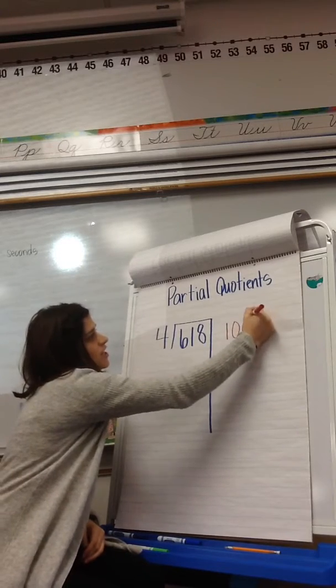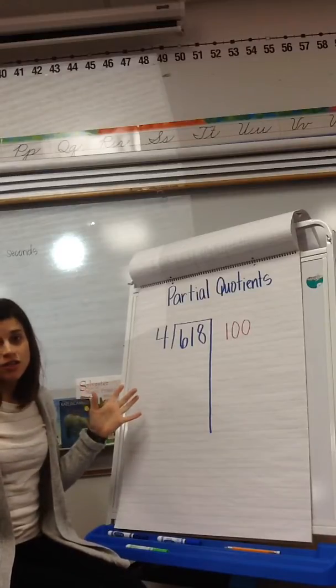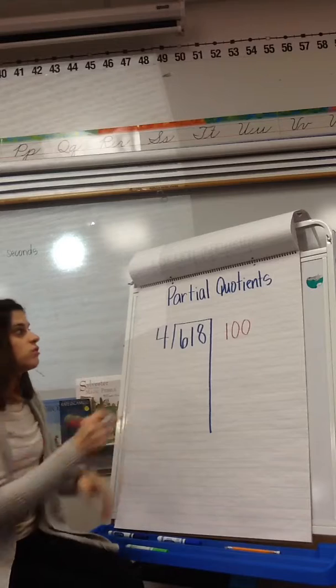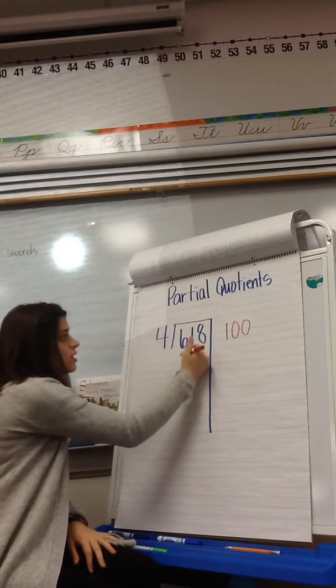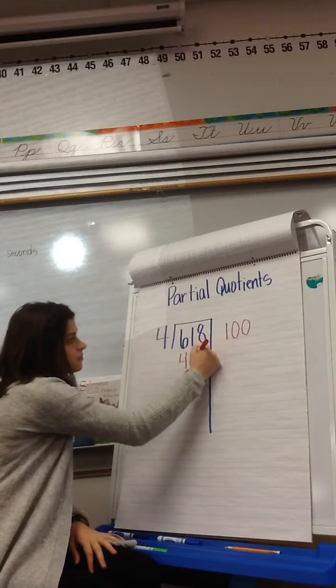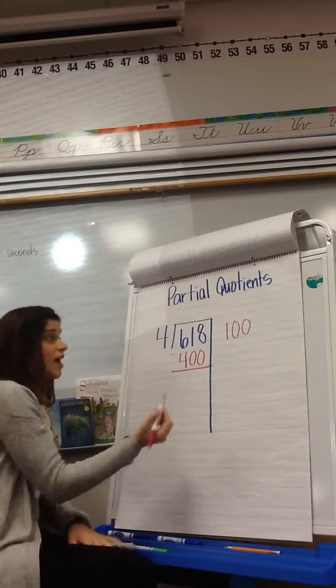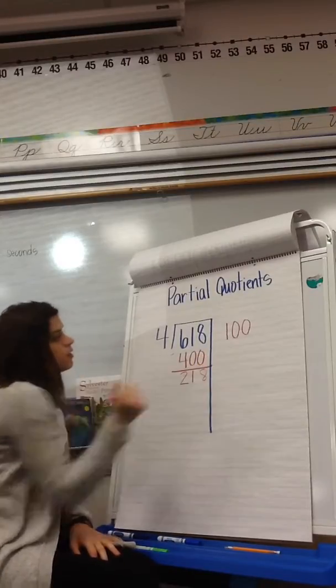This is where I like to think of it as a guess-and-check type of method to solve long division, because I can guess 100 and go from there. So I guess 100, let's check. 100 times 4 is 400. I subtract.